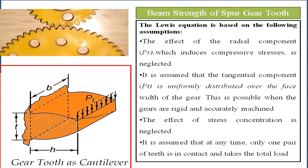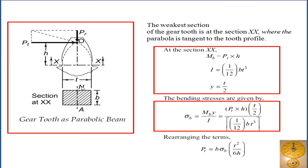The tangential component Pt is uniformly distributed over the width b of the gear. Here, b is the face width, t is the tooth thickness, and h is the height of the gear tooth. Based on these assumptions, Lewis derived the beam strength equations. The cross-section of the tooth varies from the free end (top) to the fixed end at the gear blank, so a parabola is constructed within the tooth profile.